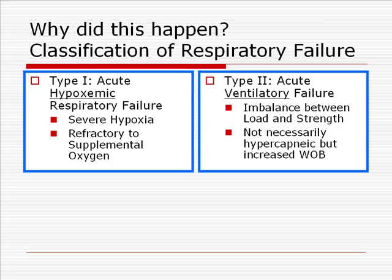Type 2, or acute ventilatory failure, applies to those patients who get intubated largely because of an imbalance between the patient's load — i.e., those things making the patient breathe — versus the patient's strength. The patients may not necessarily be hypercapnic; in fact, they usually are not, but they will all evidence manifestations of an increased work of breathing.